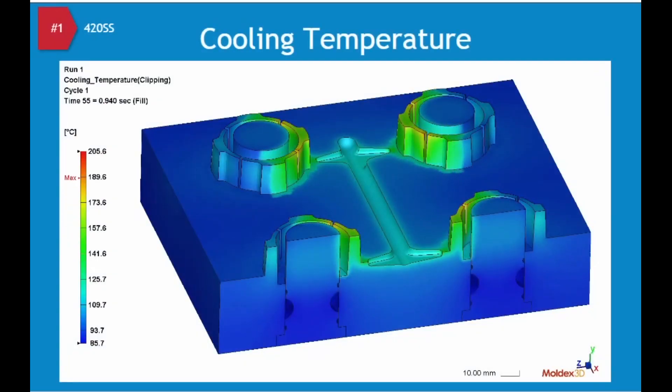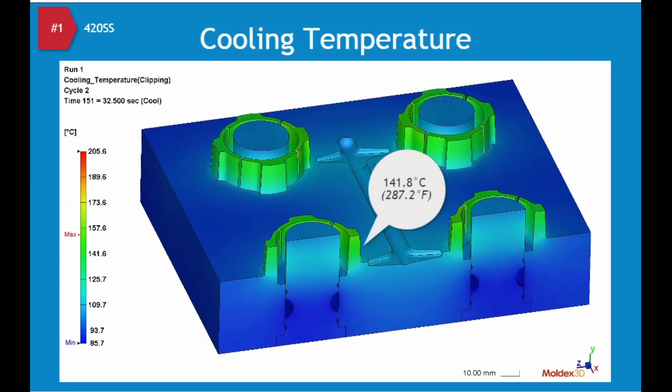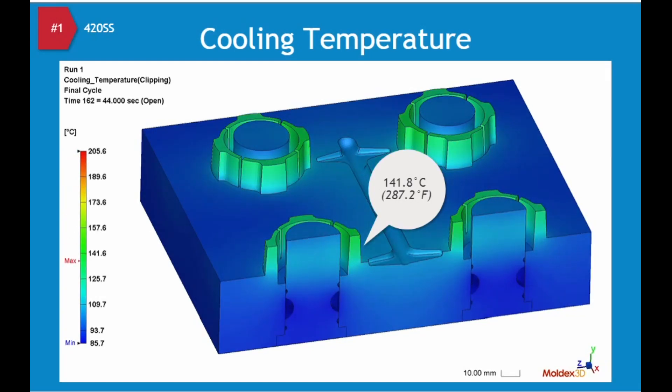This animation shows the tool temperature development without the polymer material. Notice that the tool steel temperature rises to 141.8 degrees Celsius near the gate and that the highest temperature is at the top of the thin steel section. There is a temperature variation of about 56 degrees Celsius, which is a significant range that could cause cooling-related dimensional and surface appearance challenges.